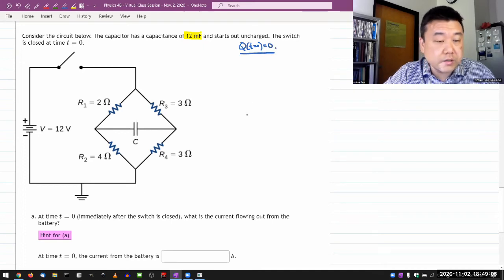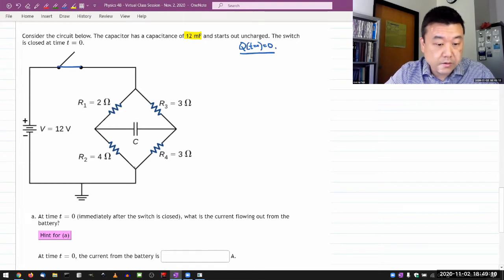The switch is closed at time t equals 0. It's asking about the transient behavior at t equals 0.